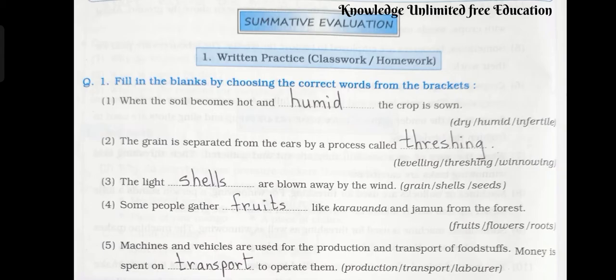Number 4: Some people gather fruits like Karwanda and Jamun from the forest. Answer: fruits. Number 5: Machines and vehicles are used for the production and transport of foodstuffs. Money is spent on fuel to operate them. Answer: transport.